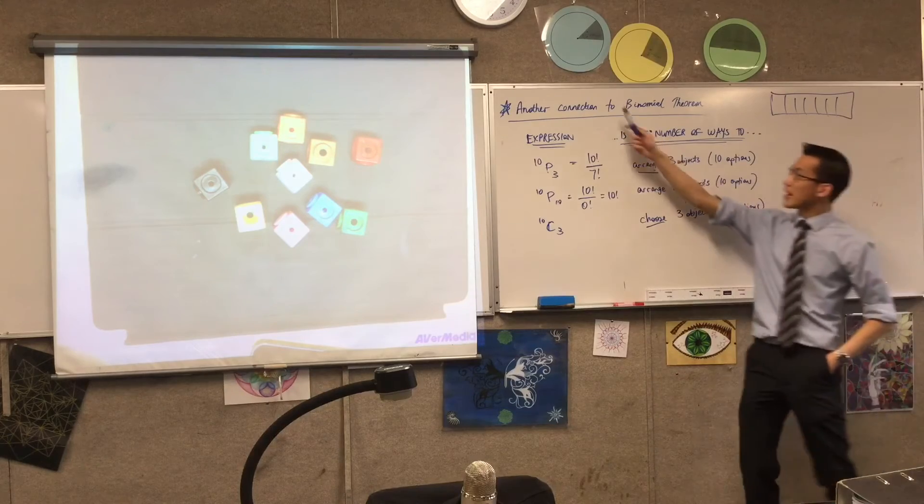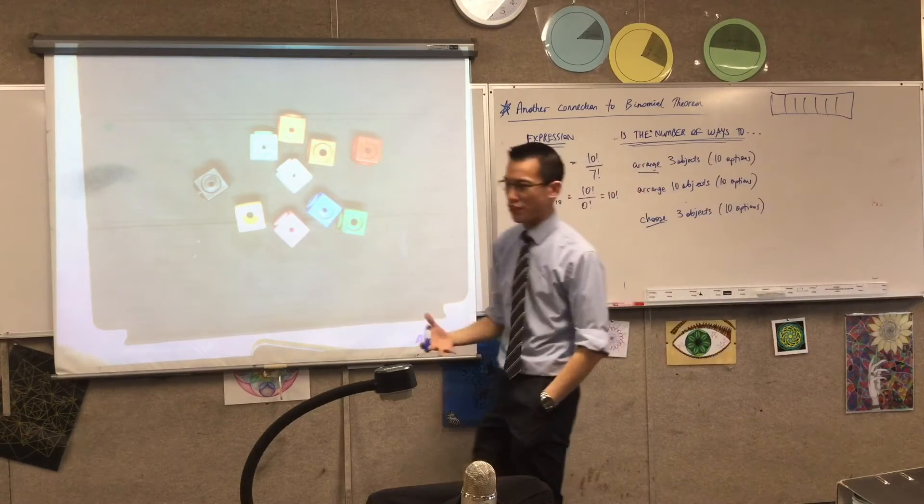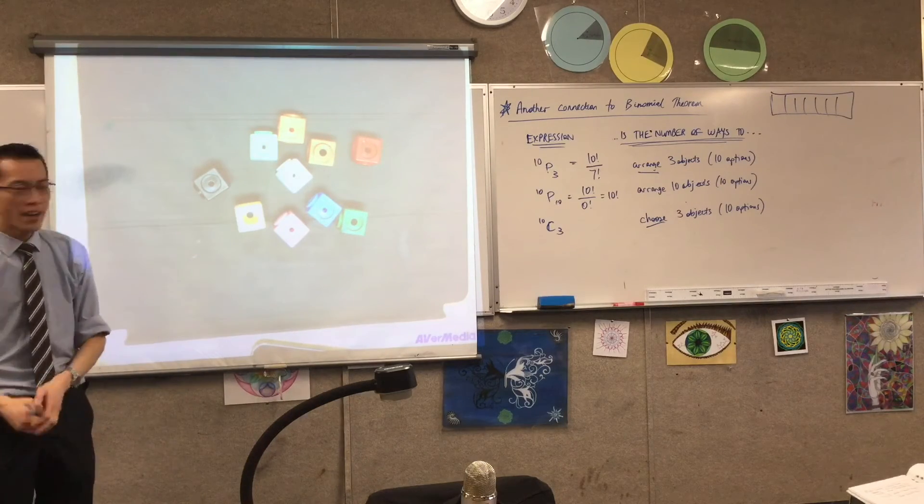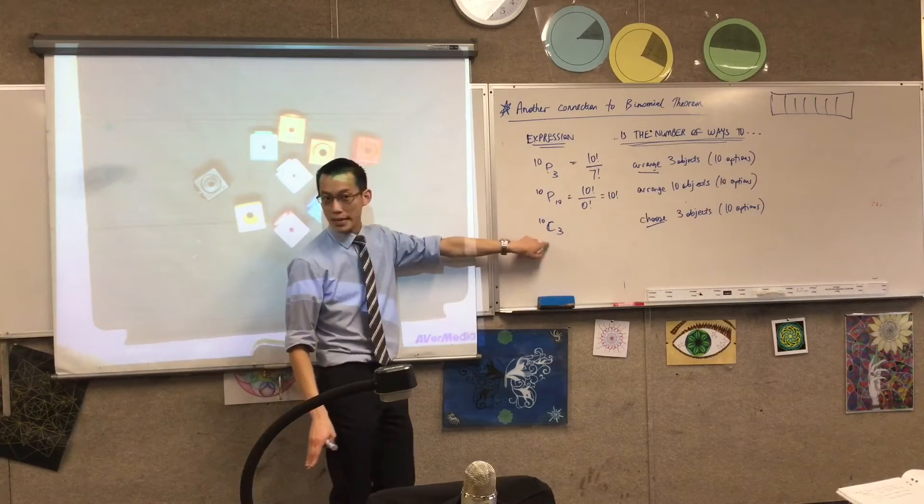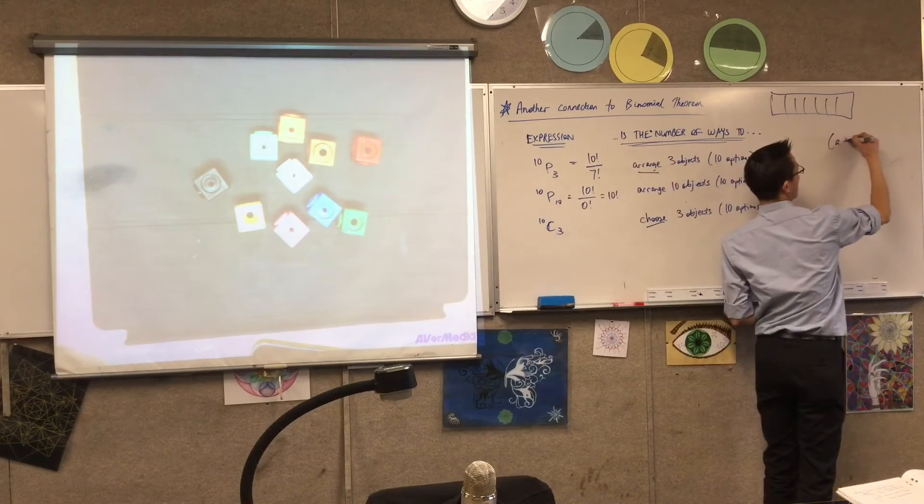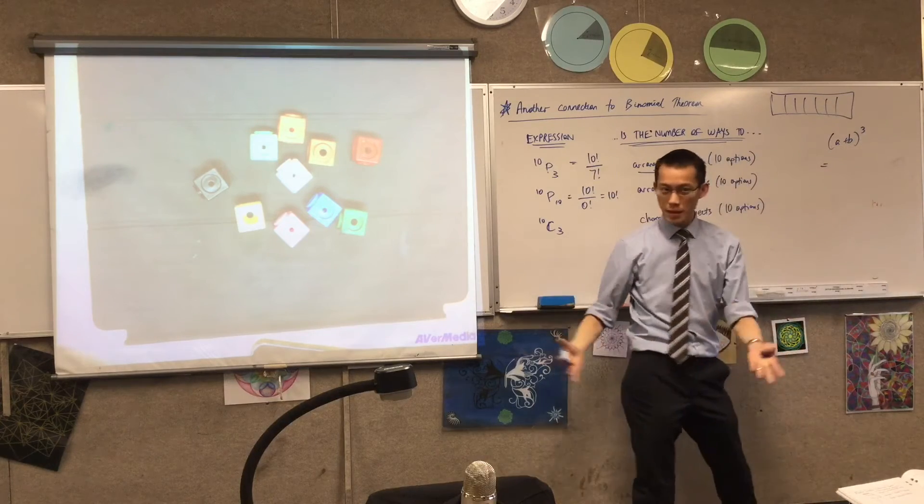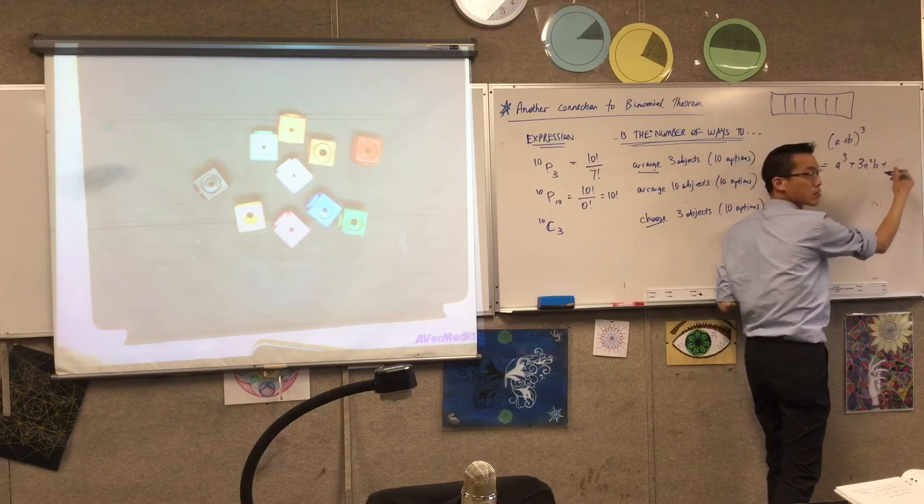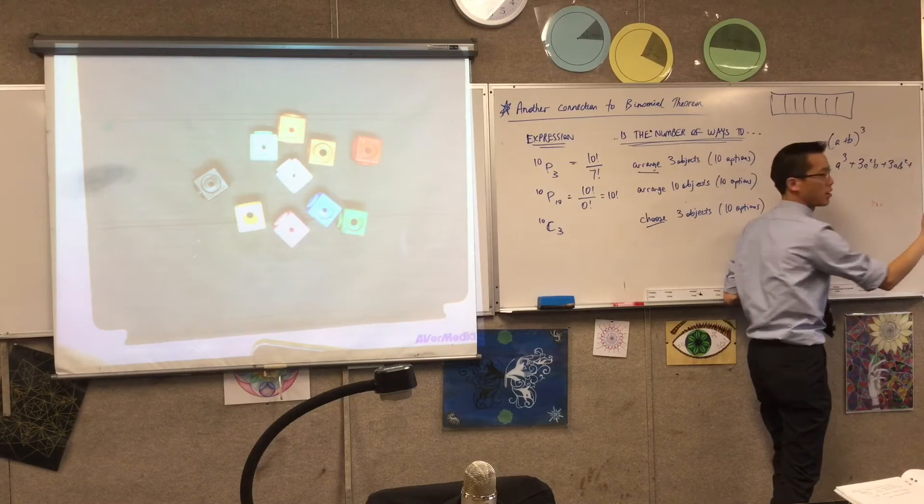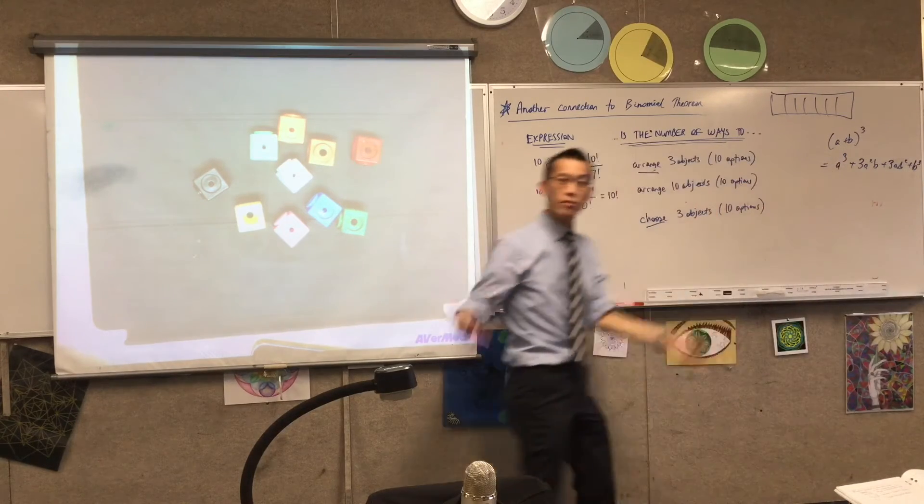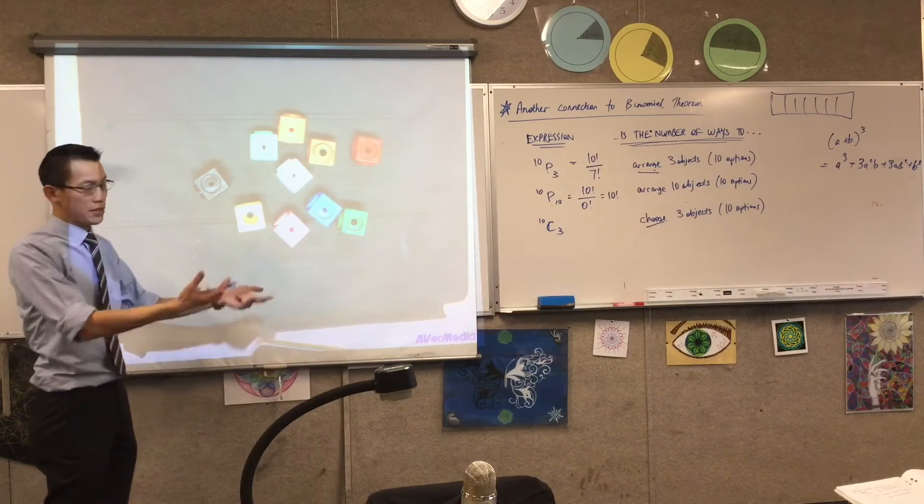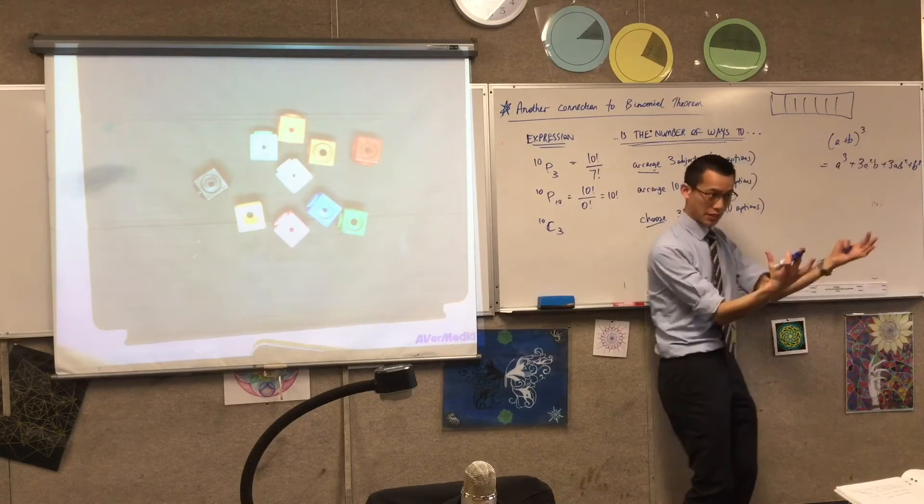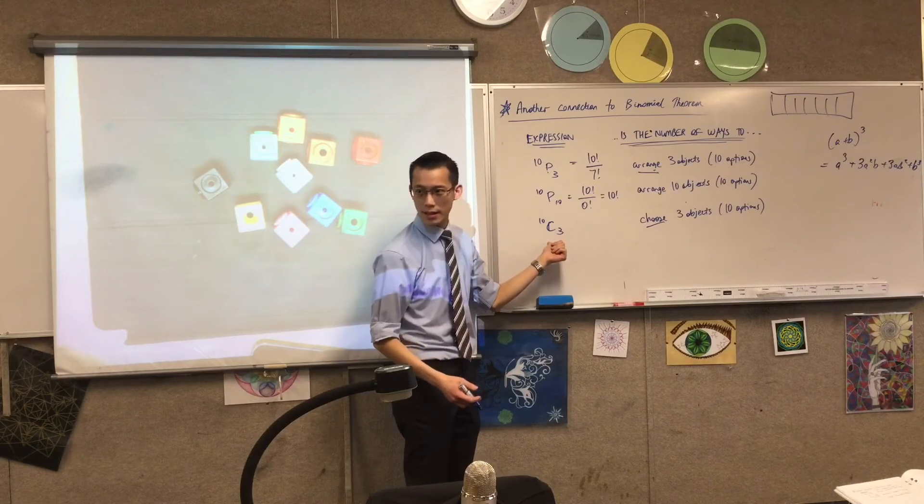Now, I'm calling this another connection to binomial theorem, because the original connection I gave you was if you take something like a plus b, a binomial, and you raise it to a power, like 3. The reason why the coefficients end up being these guys is because when you expand this, right? Do you remember what the expansion is, like at the end? I guess you'd have a cubed plus this plus this plus b cubed. So what this means is there are three ways to get two a's and a b. There are three ways to get an a and two b's, right? So you're choosing from here, and because you've collapsed them all together, you don't care about their order anymore. That's why it's this guy.